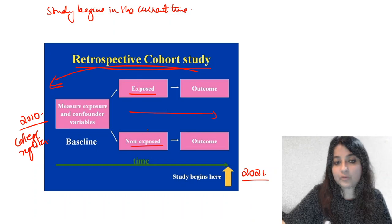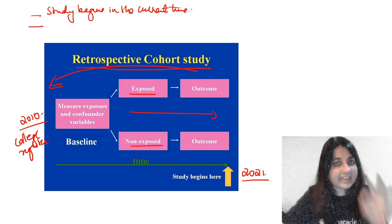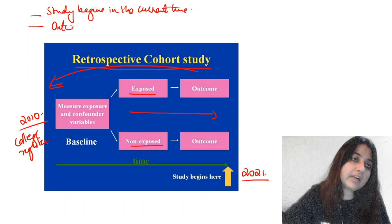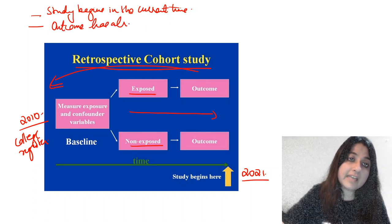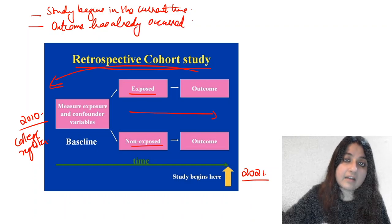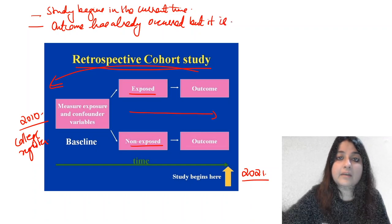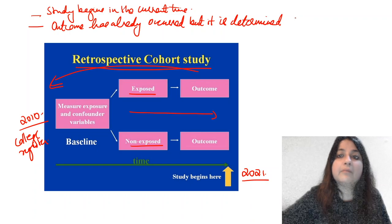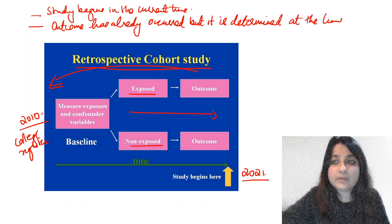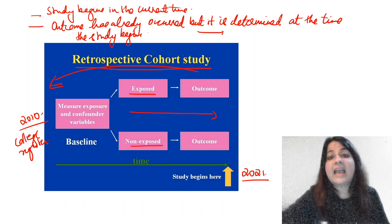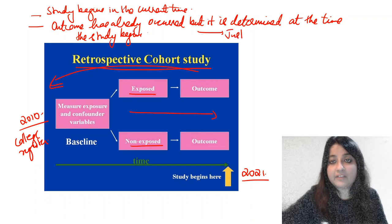So the golden point is: the study is beginning in the current time, but the outcome has already occurred — they might already be suffering from a disease. The outcome has already occurred, but it is determined at the time the study begins. As soon as the study begins, that is when we determine the outcome.